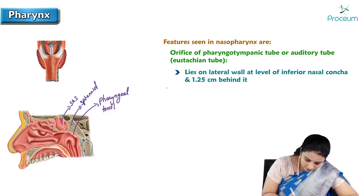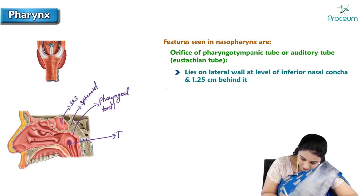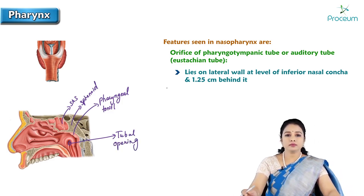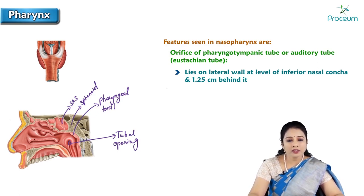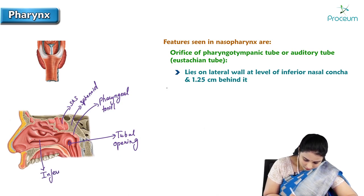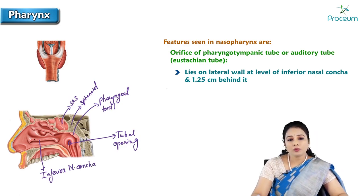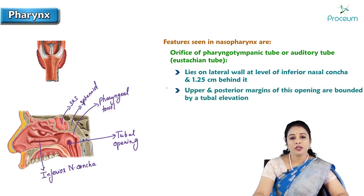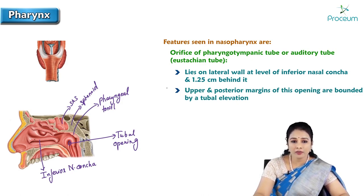Here is the opening of the auditory tube or tubal opening. This auditory tube opening is present at the level of the inferior nasal concha. This is the cut part of the inferior nasal concha. It lies almost 1.25 cm behind the inferior nasal concha.